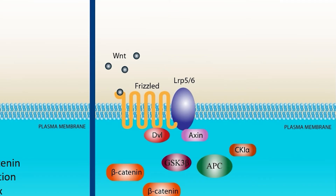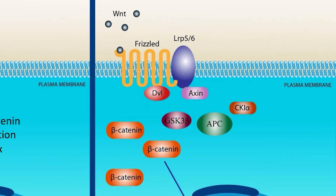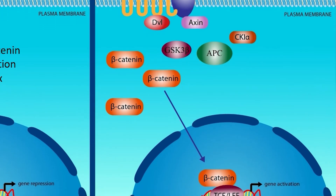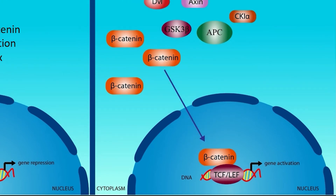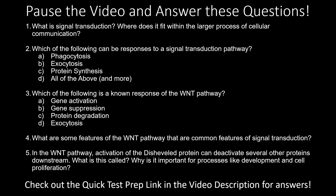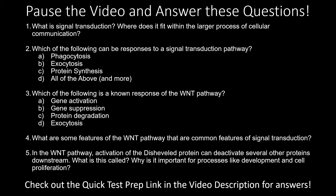When a Wnt signal molecule — most often released during embryogenesis — binds to the receptor protein known as frizzled, the resulting conformational change causes the disheveled and axin proteins to bind to the receptor, breaking apart the beta-catenin destruction complex. Since beta-catenin is no longer being destroyed, it can enter the nucleus and activate certain genes. Wnt signaling is just one of many pathways activated by Wnt molecules; for instance, it can also modulate glucose uptake from insulin signaling and may contribute to insulin resistance in type 2 diabetes.